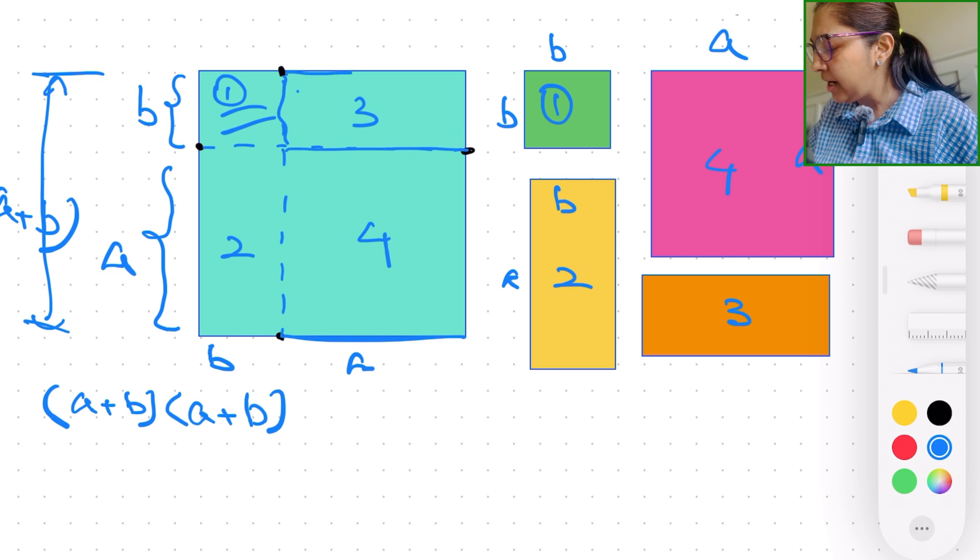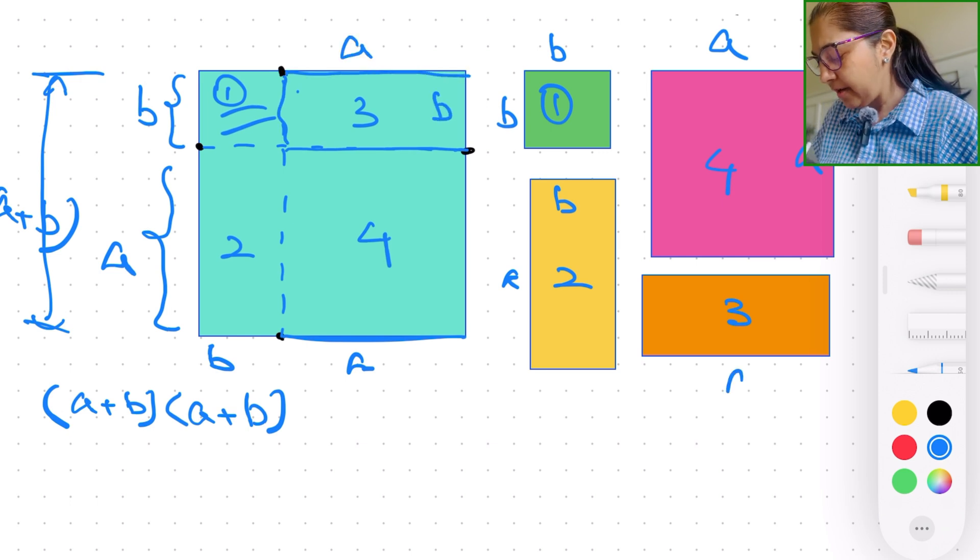What about the number 3? Again, this is a and this is b. So we have an a and a b.